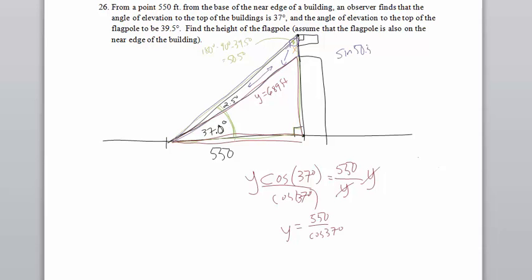So I can set up sine of 50.5 degrees divided by the side opposite that, which is the 689, and then I have sine of 2.5 degrees divided by the side opposite, which we're calling x. That's going to allow me to solve for the height of the flagpole. So I can cross multiply here, x times the sine of 50.5 equals 689 times the sine of 2.5 degrees.